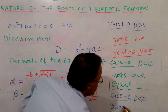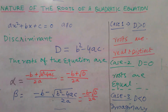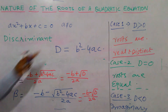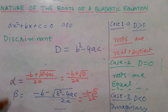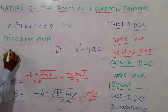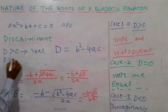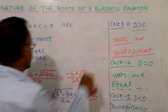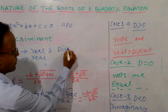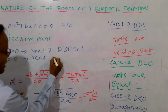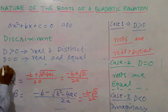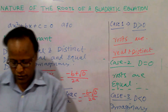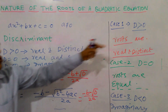So finally, in summary: for ax² + bx + c = 0 where a ≠ 0, the nature of the roots depends on the value of the discriminant D. We discussed three cases: if D > 0, the roots are real and distinct; if D = 0, the roots are real and equal; and if D < 0, the roots are imaginary. You can arrange this in tabular form.